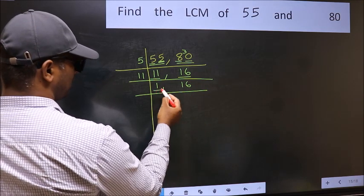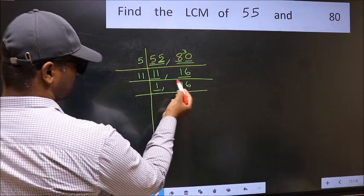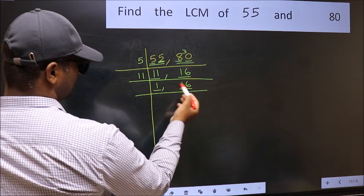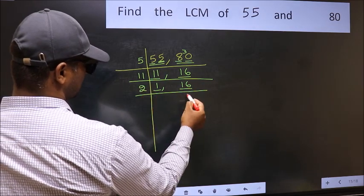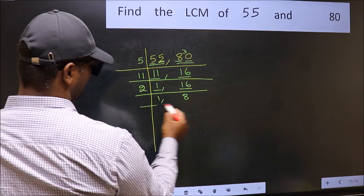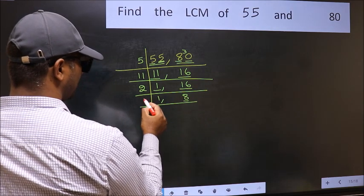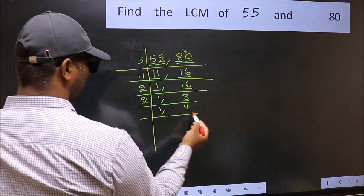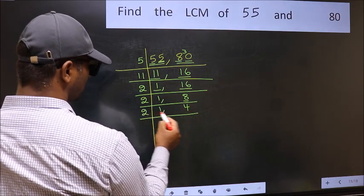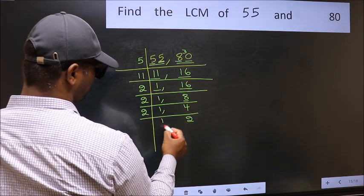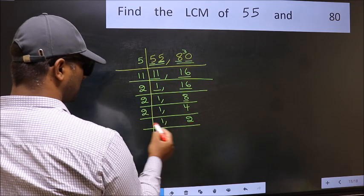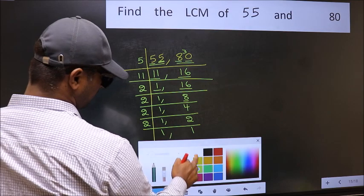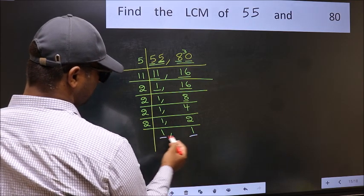Now we got 1 here, so focus on the next number 16. 16 is 2 eights: 16. Now here we have 8 — 8 is 2 fours: 8. Now we have 4 — 4 is 2 twos: 4. Now we have 2, which is a prime number, so 2 once is 2. We got 1 in both places.